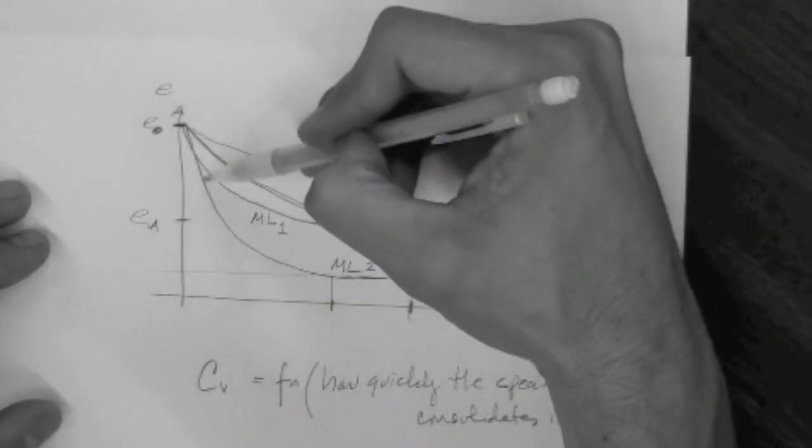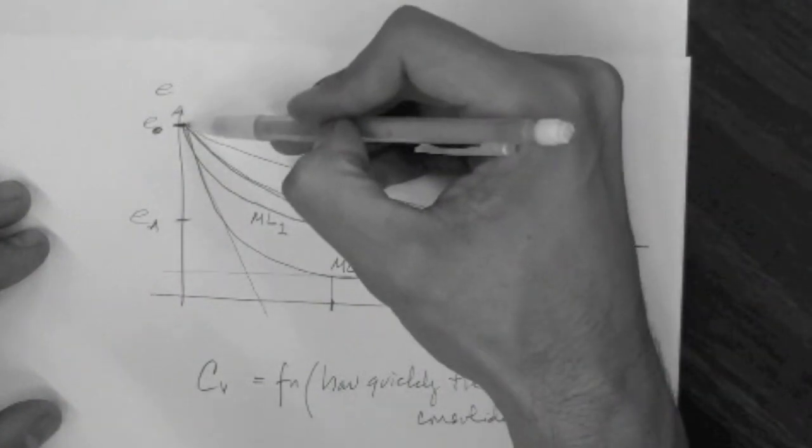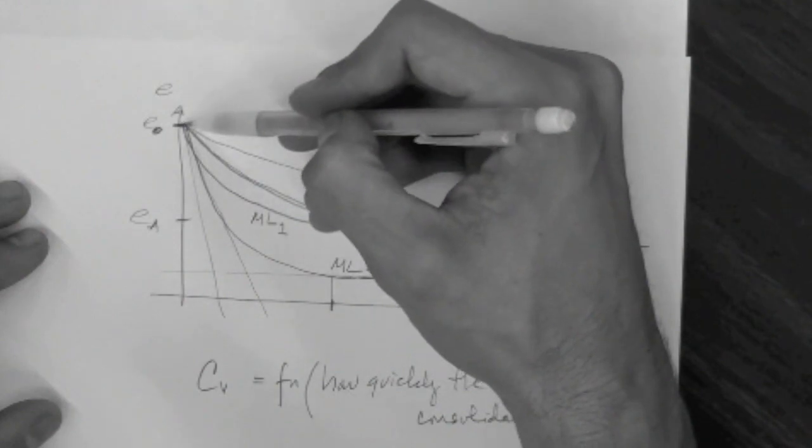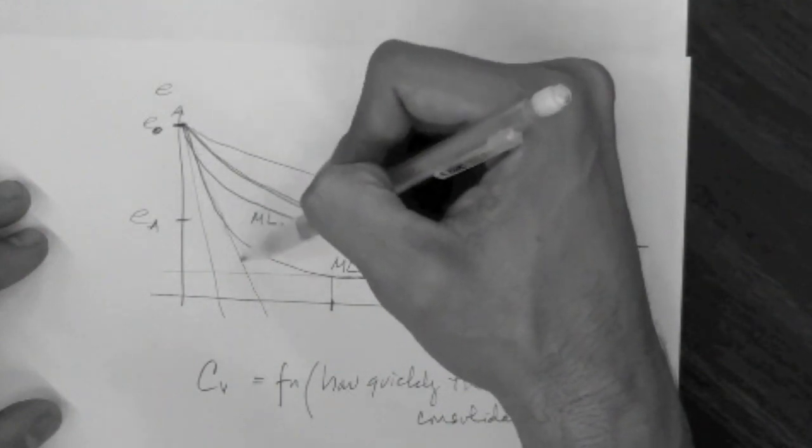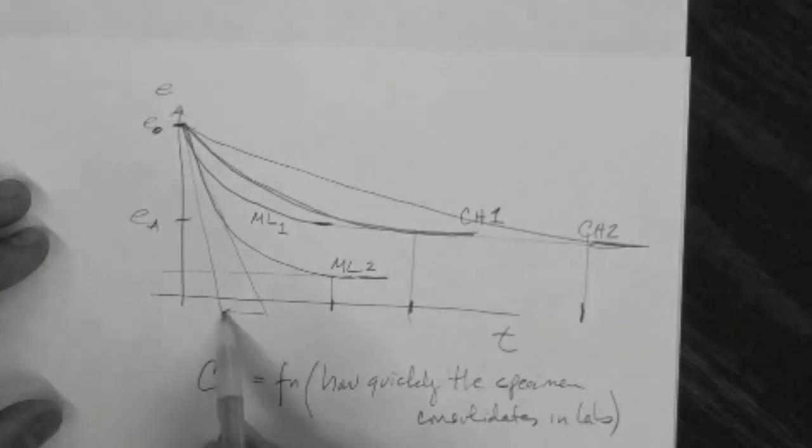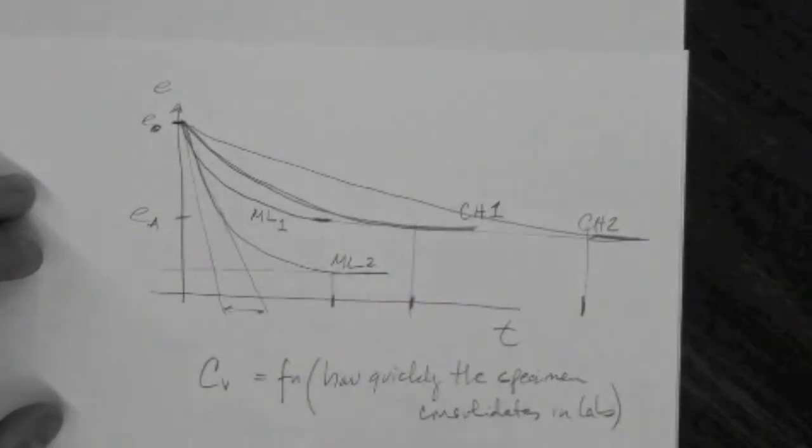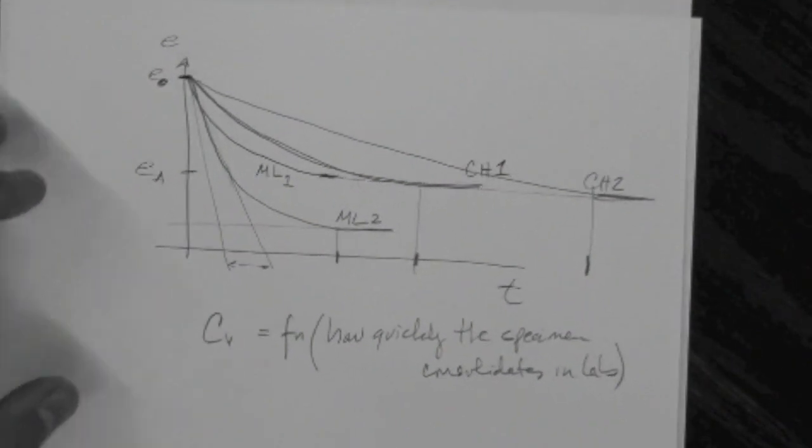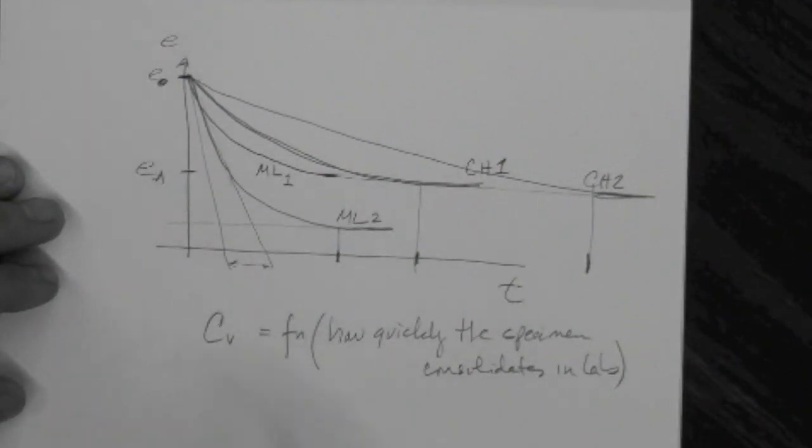So what we do is we determine, we draw slopes, two slopes. One that covers the initial portion of the curve, and then we offset that by a certain amount. Then we do some calculations to determine the C sub V. The important thing is you're going to learn how to do all that in the lab. It's in the book if you want to read it. I highly encourage that you read it, how to determine C sub V. But for this course, what is important is essentially what C sub V is a function of. It's a function of the stiffness of the soil and hydraulic conductivity.